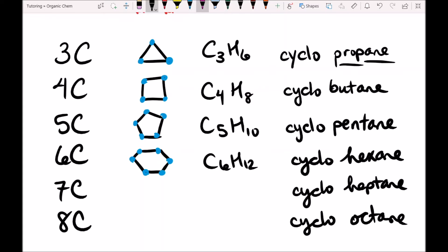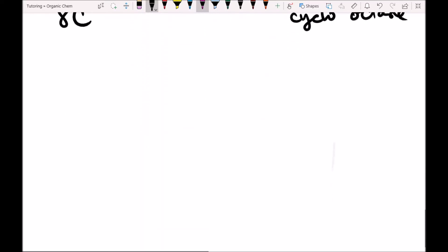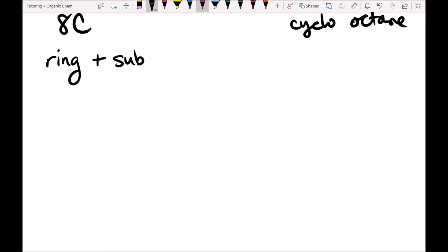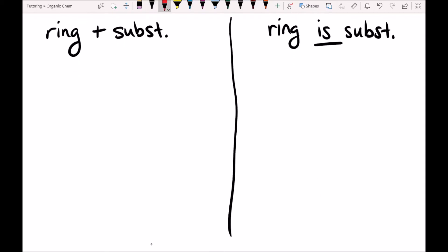That's the naming scheme for plain cycloalkanes with no substituents. But what if we have branches or other atoms? Things get a little more complicated. There's two real realms of possibility. We can have a ring plus a substituent, or we can have a ring that is the substituent. When the ring is the substituent, that means the ring has fewer carbons than the parent chain.